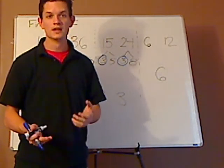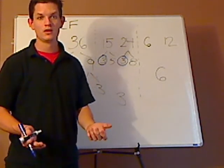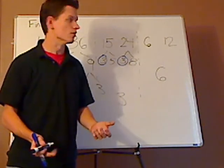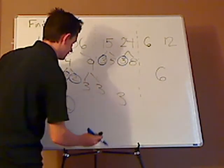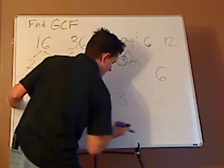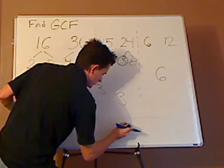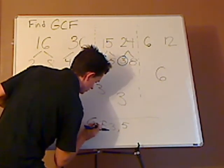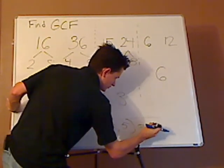If I have something that there's a number that can't go into either of them, you can always take out a 1. For example, if I have 3 and 5, the GCF of 3 and 5 would be 1. Let me write it this way. GCF of 3 and 5 equals 1.